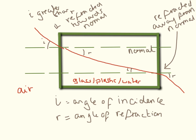So I is the angle of incidence, R is the angle of refraction. When we're moving from air into glass, plastic or water, I is going to be greater than R, is going to be refracted towards the normal and when we're moving out of it, is when we're refracted away from the normal.